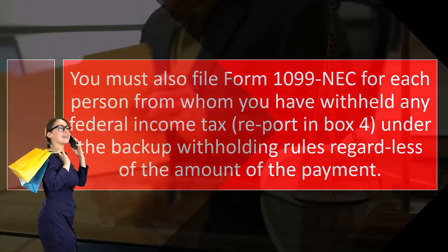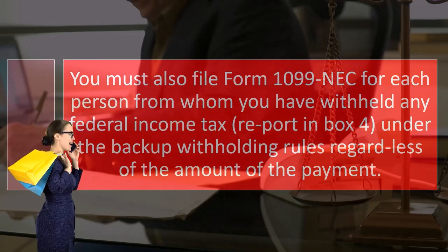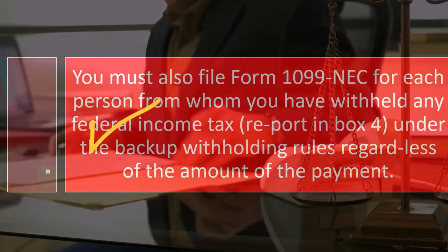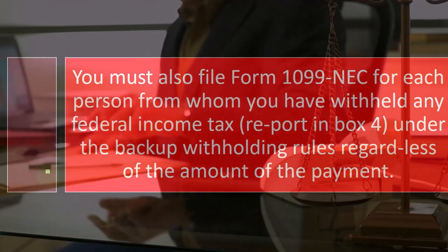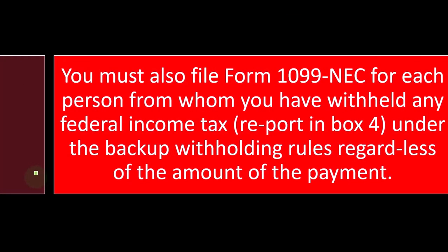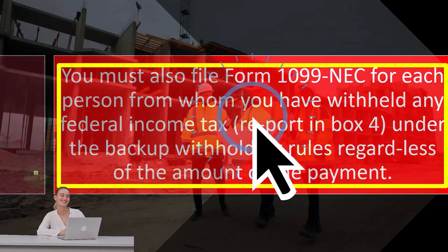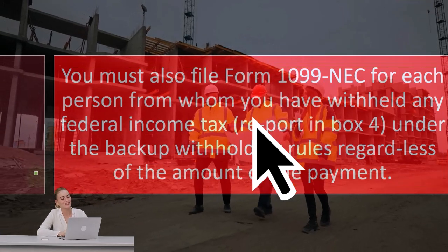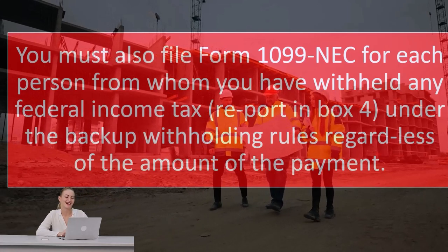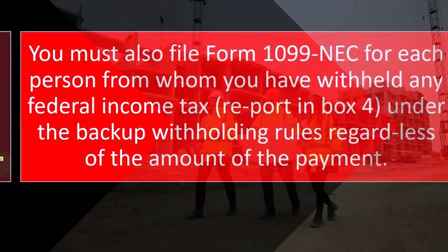Payments to an attorney also require reporting. You must file form 1099-NEC for each person from whom you have withheld any federal income tax under the backup withholding rules, regardless of the payment amount. In other words, for employees the government forces you to withhold and pay on their behalf. For contractors, they don't force you to withhold, but they still want you to report who you paid — providing the IRS with the contractor's Social Security number, the amount paid, and their address so the IRS can collect on their own.